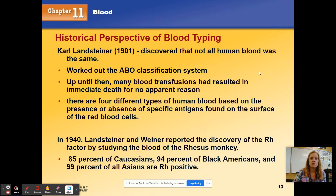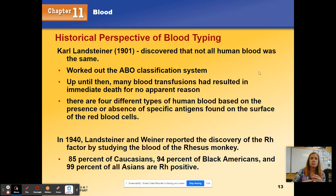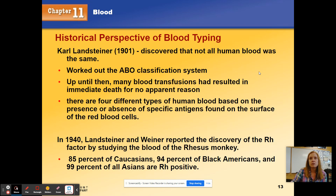Landsteiner determined that there are four different basic types of blood, and what makes your blood a certain type is something called antigens on the surface of your red blood cells. Think of antigens as little flags or markers on your blood cells that tell your body what blood type you are. Your body only recognizes what is natural to it, so if you have a certain blood type you need to receive a similar type, or your body recognizes the foreign blood as an invader and wants to attack it.